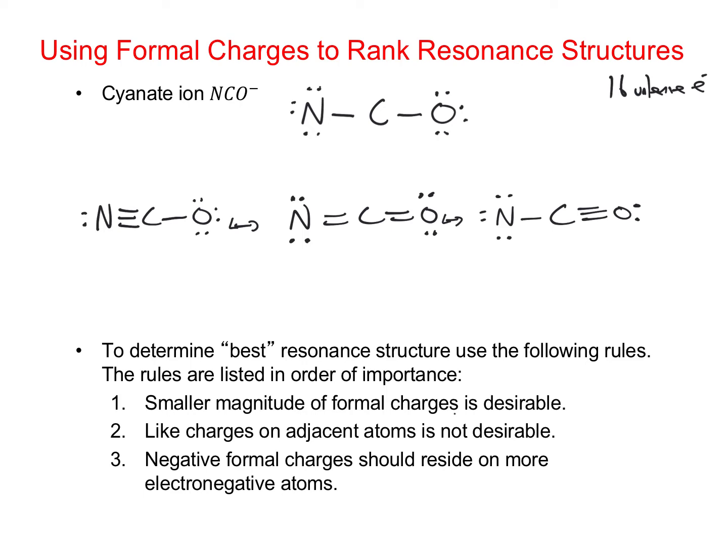Going from left to right on the first structure: nitrogen normally has 5 valence electrons; here it has 2 lone pair electrons and 3 bond sticks for 5, so 5 minus 5 gives a formal charge of 0. Carbon normally has 4 valence electrons, no lone pairs and 4 sticks, so carbon is also 0. Oxygen normally has 6 valence electrons; here it has 6 lone pair electrons and 1 stick for 7, so 6 minus 7 gives minus 1 on the oxygen.